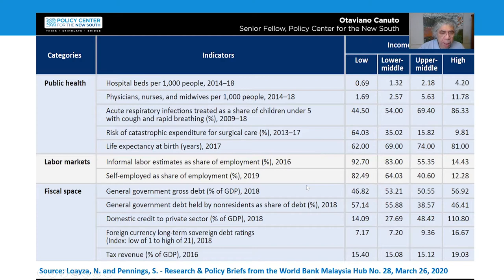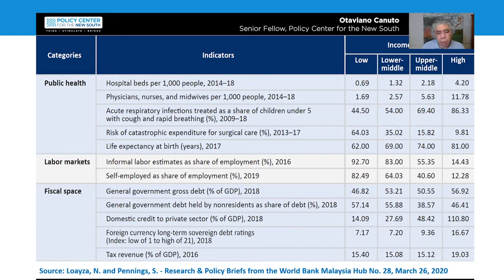Low- and middle-income countries also do not have enough fiscal space — that is to say, the ability to deploy public funds and resources to counter a large negative shock. They apparently do not have larger public debt to GDP ratios compared to developed countries, but their debt is more subject to exchange rate and maturity risks. Also, their credit ratings are lower and their financial markets are shallower. Furthermore, the flight to quality in financial markets since January has meant that for some countries it will be more difficult to borrow externally to cover their fiscal deficits.